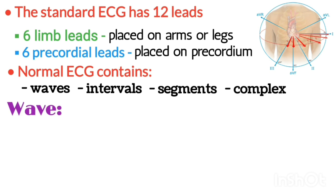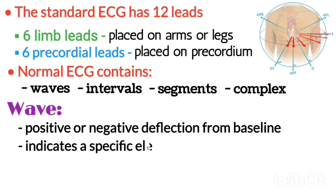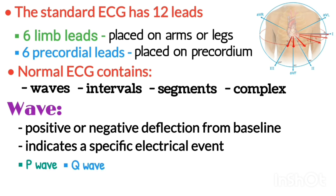A wave is a positive or negative deflection from baseline that indicates a specific electrical event. The waves on an ECG include the P wave, Q wave, R wave, S wave, T wave and U wave.